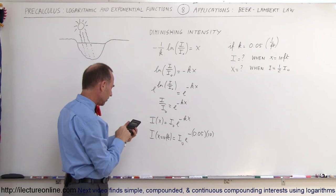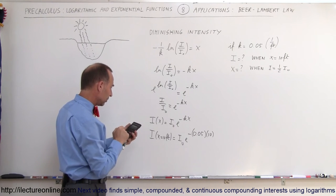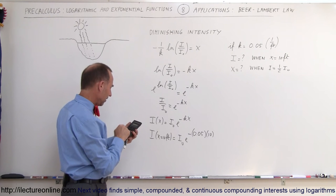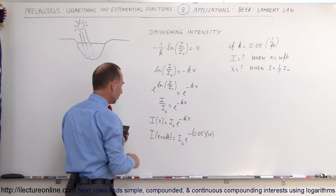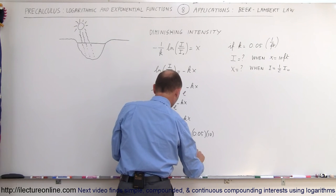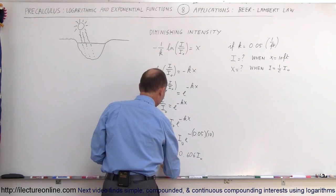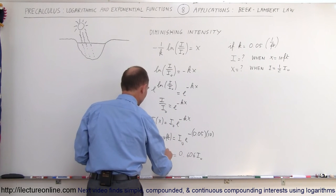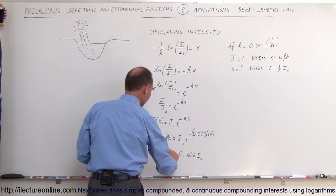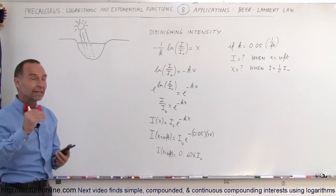We calculate -0.05 × 10 = -0.5, so we get e^(-0.5), which gives us approximately 0.606 times the original intensity. This means that at 10 feet into the lake, the intensity has gone down to about 60 percent of what it was near the surface.